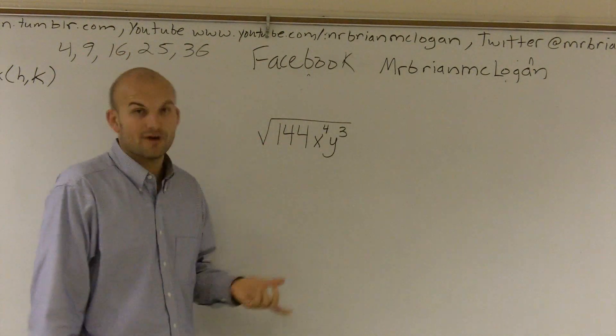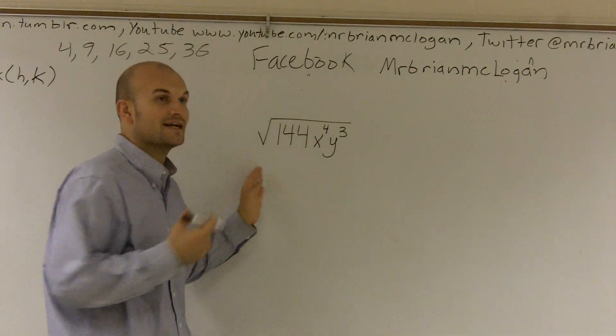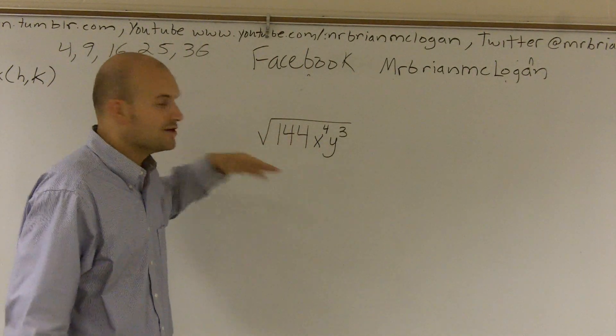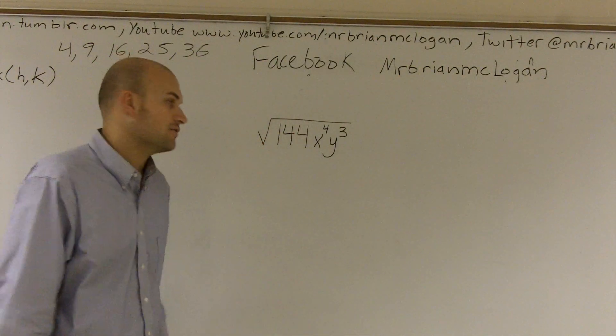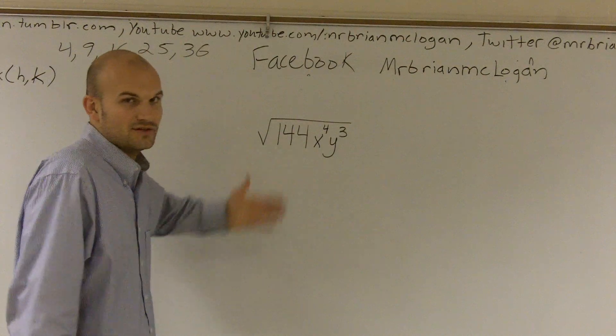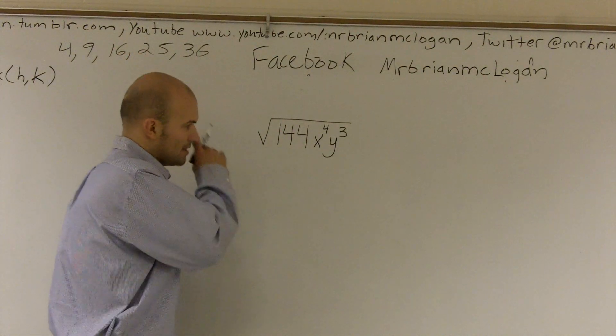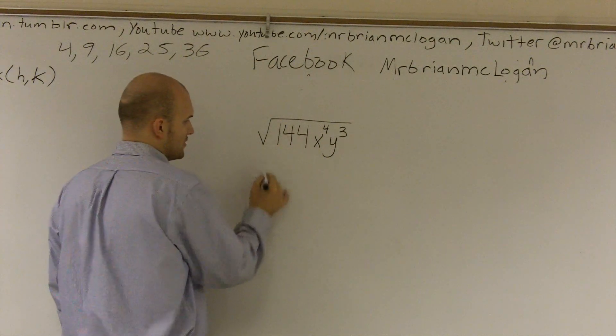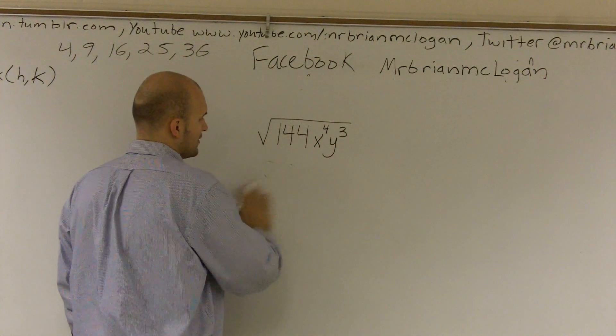So the square root of 144 is going to be 12. There's a lot of different ways you can factor this out, but when you're taking a look at the square root, I know that the square root of 144 is 12. You could also look at factoring this and you'd get 12 times 12. So the first thing I'm going to look at is I can take the square root of 144, and I know that's 12.